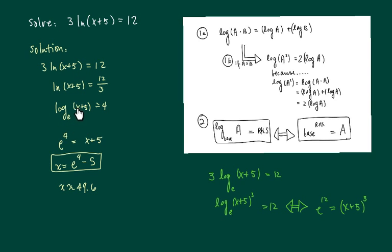I have log base e of x plus 5 equal to 4. Using the property over here, rewriting into exponential form, same base, swapping the two, I have e to the 4th equal to x plus 5.